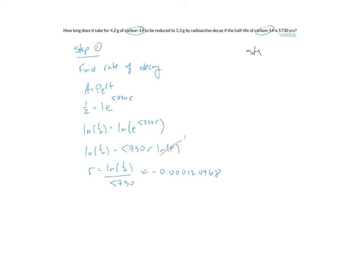Step two is to actually solve the problem. In step one we didn't really discuss the 4.2 or the 1.3. Step one was just a very generic step for carbon-14. So the actual problem now, in a similar way, we'll start with A equals P times E to the RT.